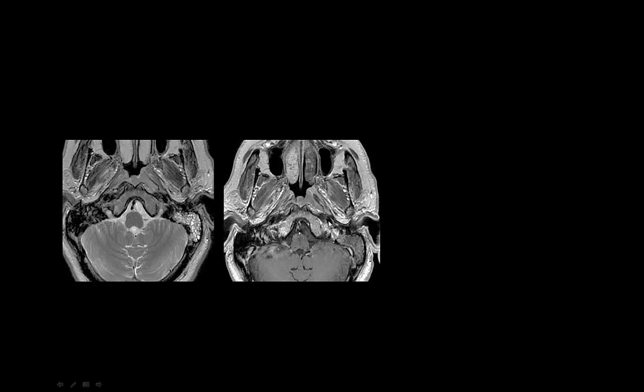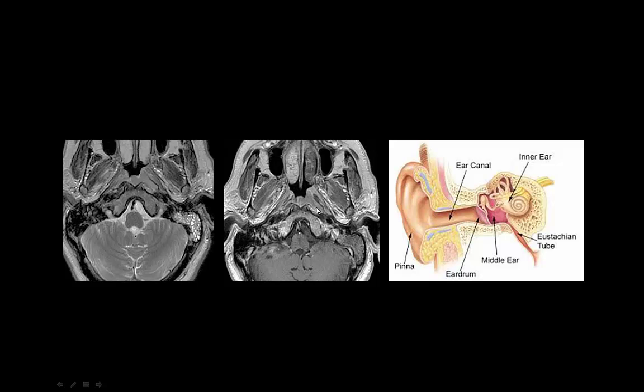Any time you have a patient with unilateral serous otitis media, remember to look at the skull base. If you see unilateral mucosal thickening involving the mastoid air cells, start looking in the nasopharynx. Occasionally you will pick up nasopharyngeal carcinomas, because they obstruct the eustachian tube causing mucosal thickening. From a medicolegal standpoint, I have seen cases where this has become an issue. When looking at the brain, always look at the very top and the very bottom — look below the skull base.